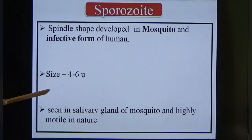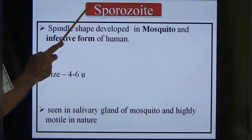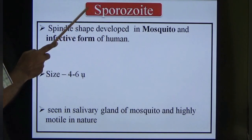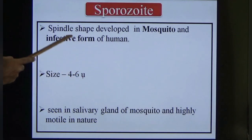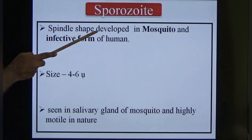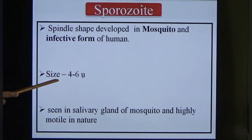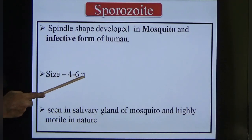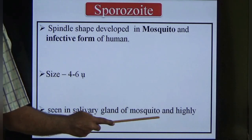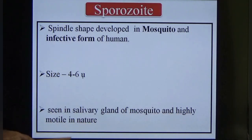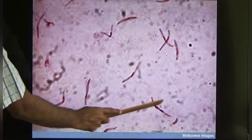That covers all four human morphological stages. Now the sporozoite — we study this because it is the infective form for humans. It is spindle-shaped, developed in the mosquito, 4 to 6 microns in size, found in the salivary gland of the mosquito, and highly motile in nature.